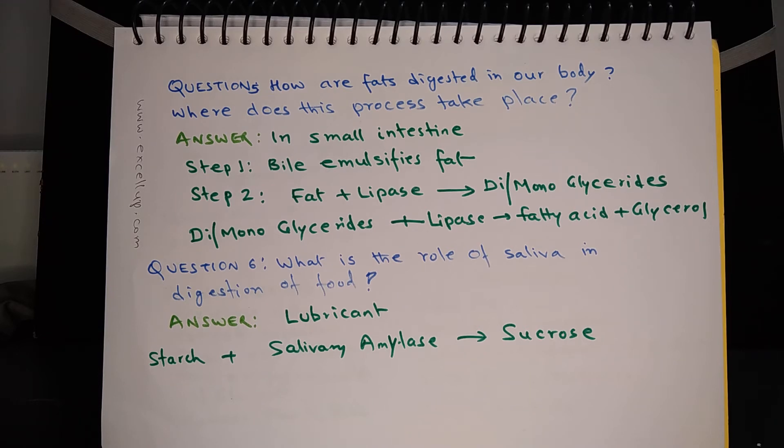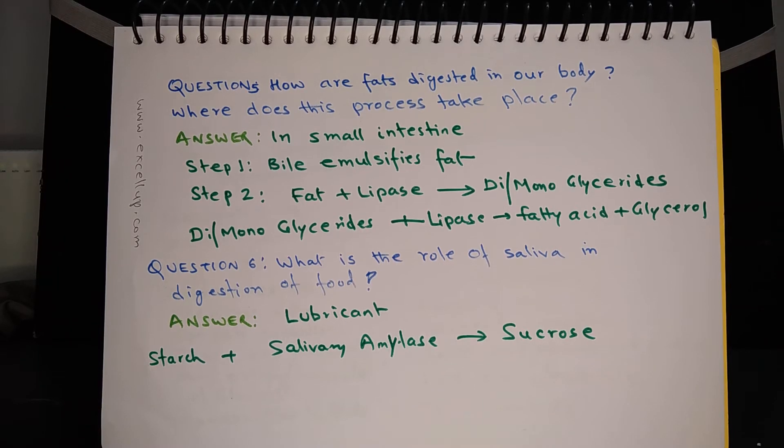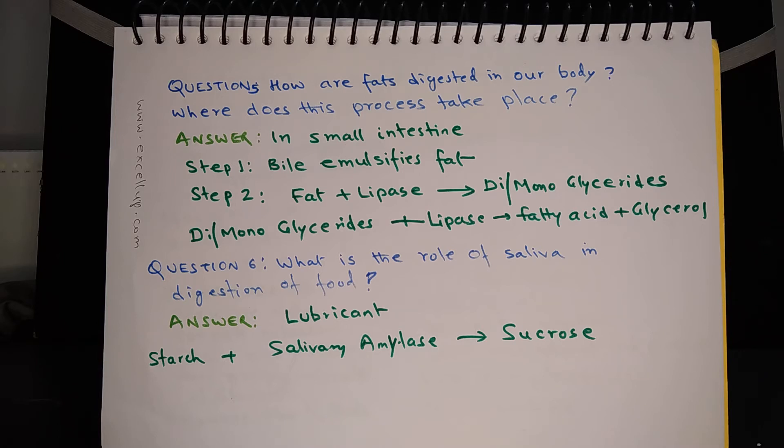Question 6: What is the role of saliva in digestion of food? Saliva plays two important roles. Saliva makes the food more slippery so that it becomes easier to swallow the food. You may have experienced that while eating some dry food stuff, like maybe a dry slice of bread, it may get stuck in your throat or you may find it uncomfortable while swallowing the bread.